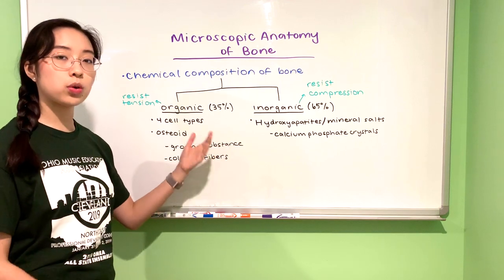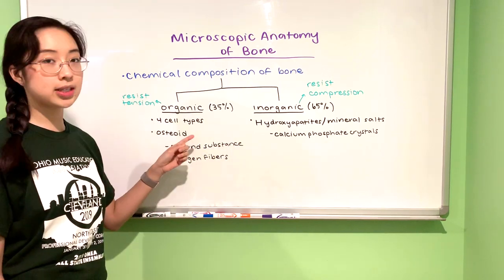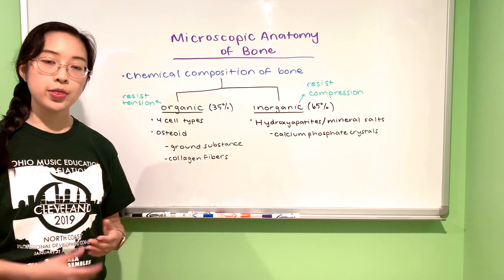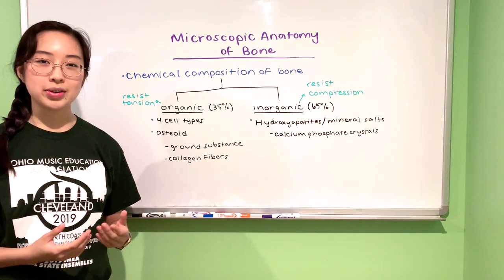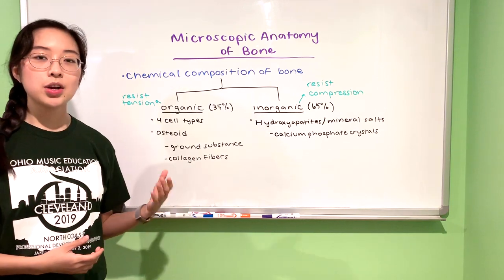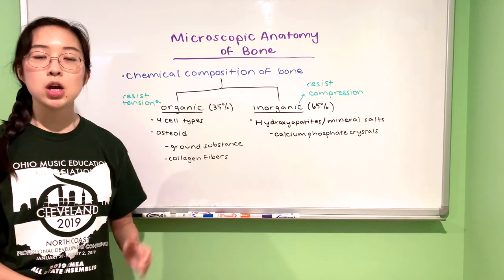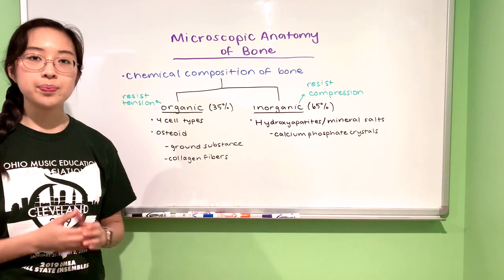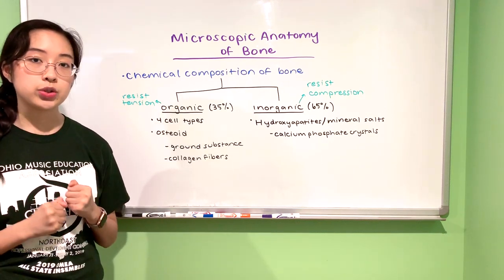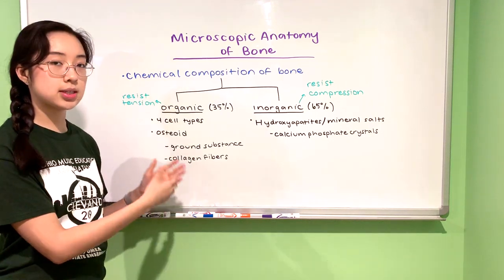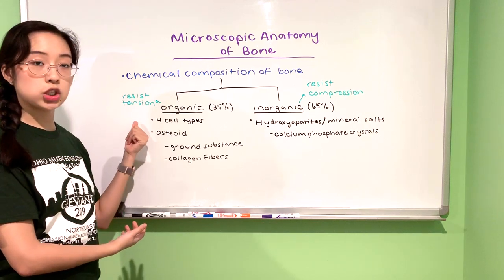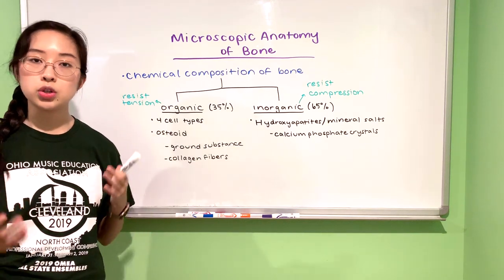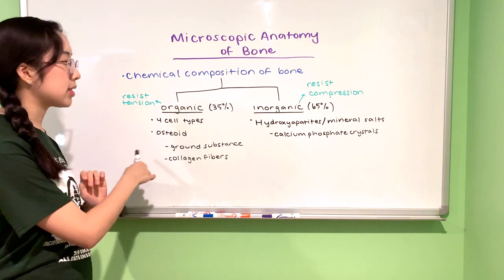Now let's talk about the chemical composition of bone. Bone is made up of two major components: organic and inorganic. The organic portion forms 35% of bone by mass and consists of the four cell types plus osteoid — about one third of the extracellular matrix — which is made of ground substance (proteoglycans and glycoproteins) and collagen fibers. The organic components enable bone to resist tension — the pulling forces created when muscles pull on bone to create movement.